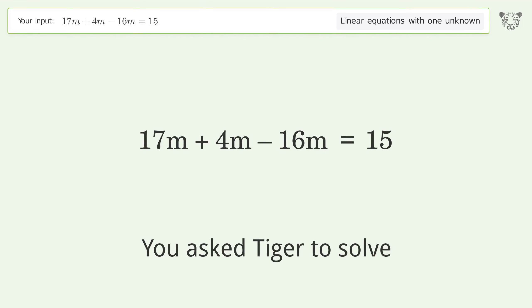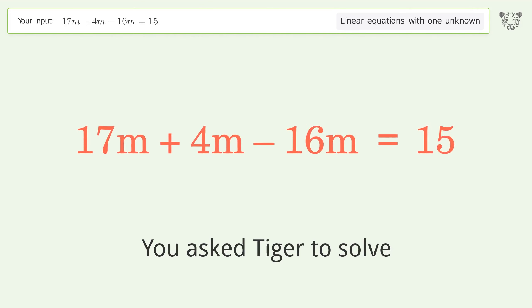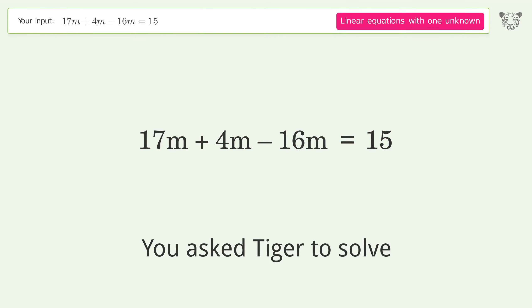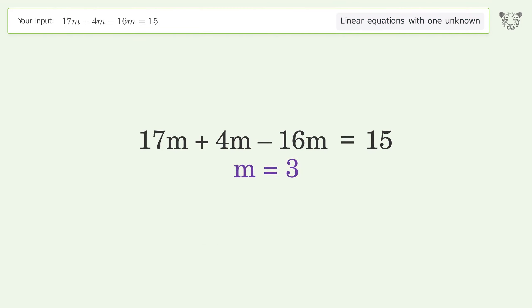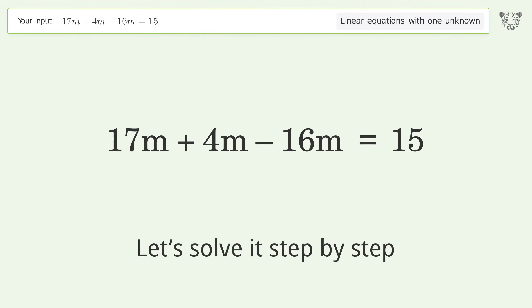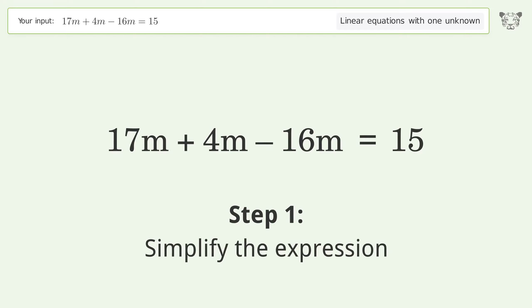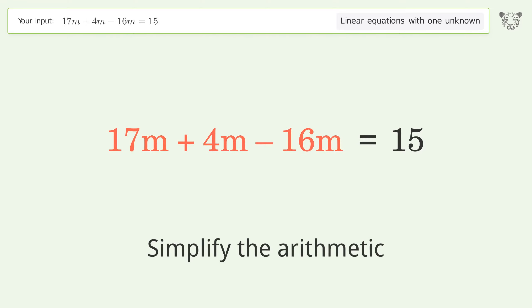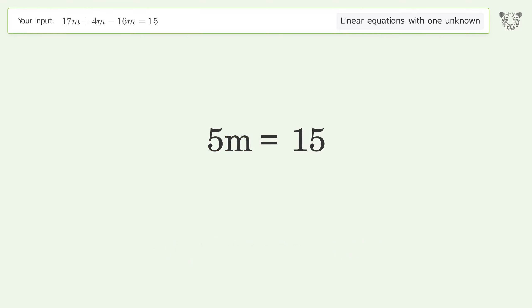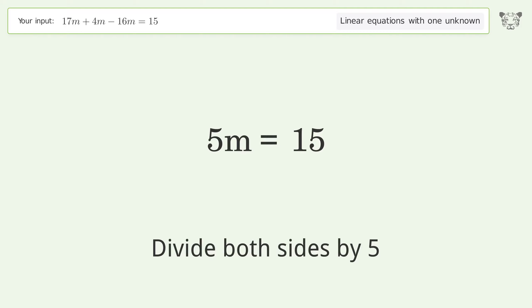You asked Tiger to solve this — it deals with linear equations with one unknown. The final result is m equals 3. Let's solve it step by step: simplify the expression, simplify the arithmetic, isolate the m, and divide both sides by 5.